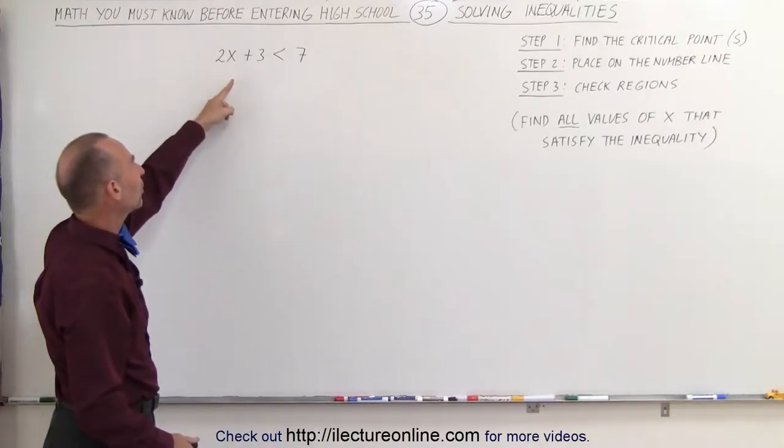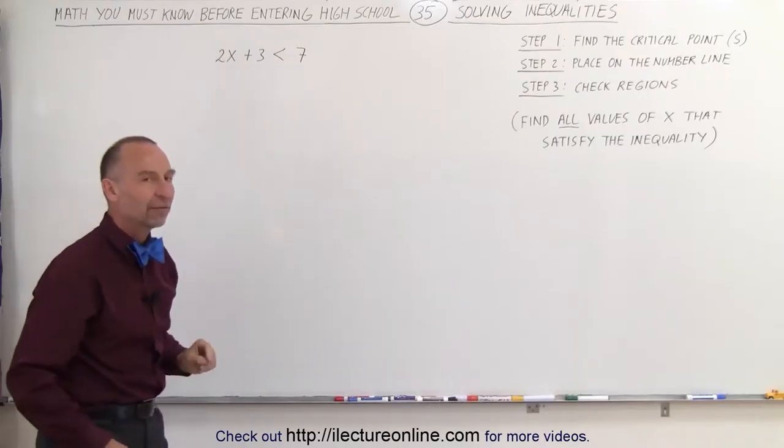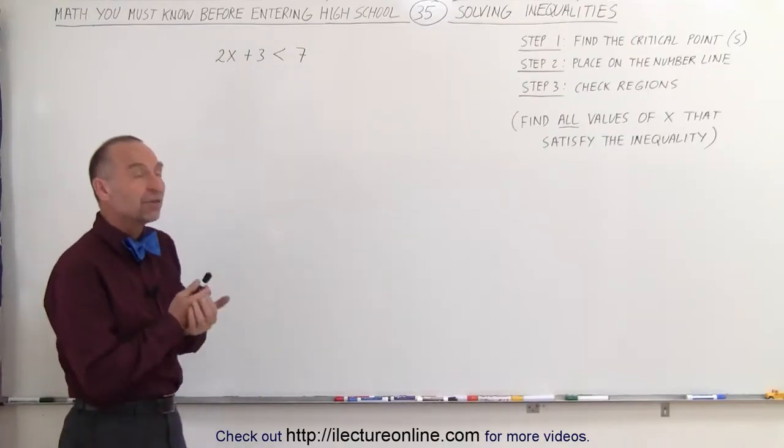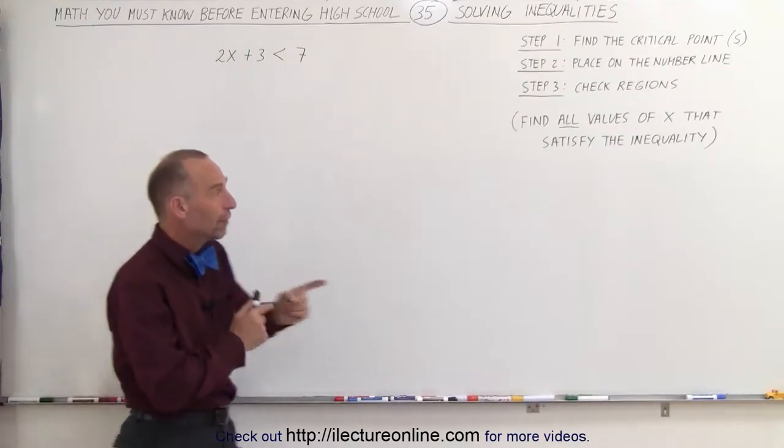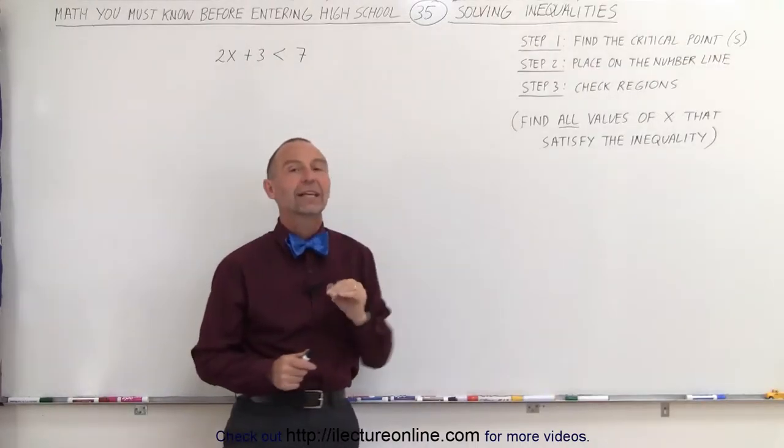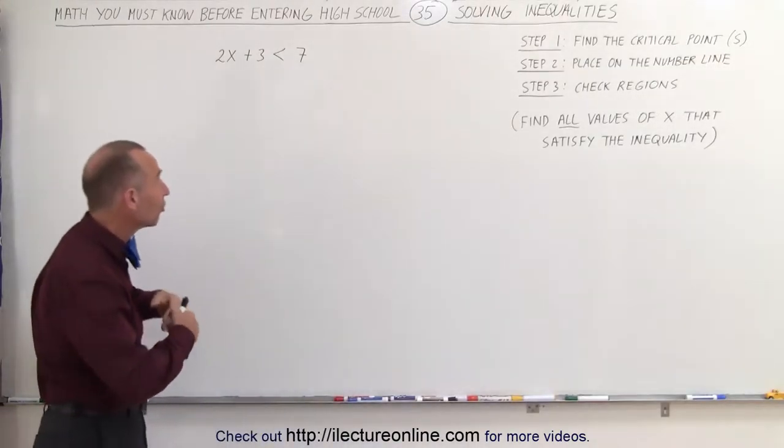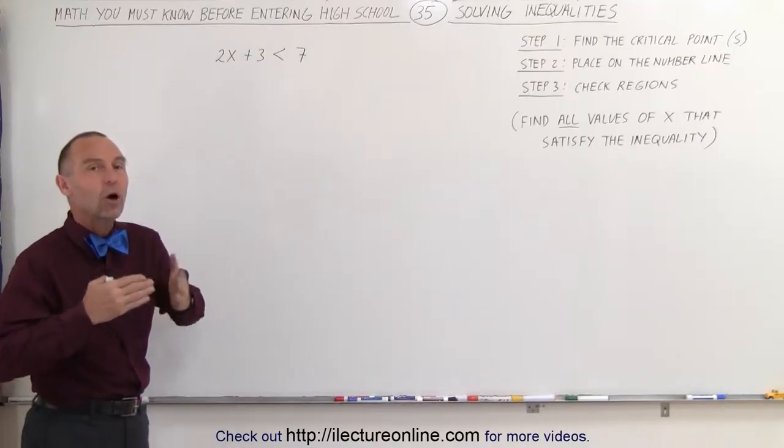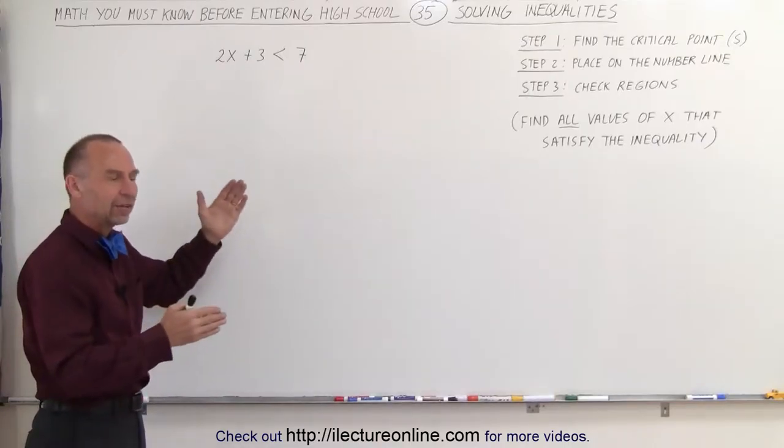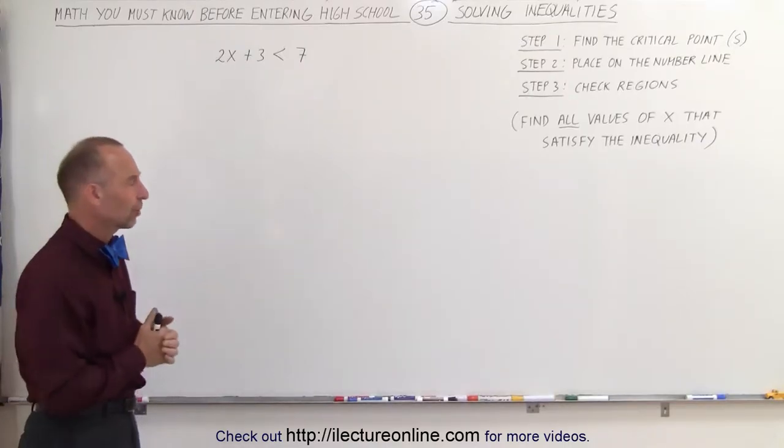Here's an inequality where 2x plus 3 is less than 7. Solving a linear inequality is solving for all the values of x that satisfy that inequality. So it's not just a single value, it's a multitude of values and we need to find all of them. It's usually a range, x between this value and that value or something like that.